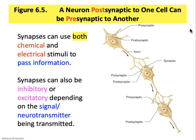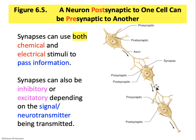When one neuron makes contact with another neuron, we call that a synapse. Synapses can be of two types: electrical and chemical. Synapses may also inhibit the neighboring cell or excite it, depending on the signal and neurotransmitter used. Importantly, wherever there is a synapse, the cell before the synapse is called the presynaptic cell, and the cell after the synapse is called the post-synaptic cell — labels that apply wherever a synapse occurs.